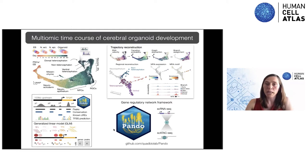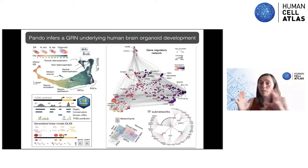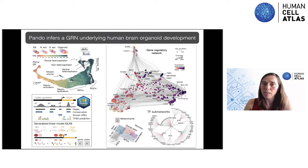Here you can see the gene regulatory network for human brain organoids. Each transcription factor is connected to a whole regulome that includes other TFs and downstream genes, including non-TF downstream genes. We have pluripotent TFs, then progression through neuroectoderm and neuro-progenitor cells, and then different TFs quite specific to ventral telencephalon, dorsal telencephalon, non-telencephalon, and mesenchyme.